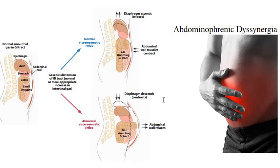Hello everybody. In the same way as the first video where we were talking about bloating, we were talking about bloating related to an invisible illness called SIBO. The second illness that may have the same symptom as SIBO is called abdominophrenic dysnergia.